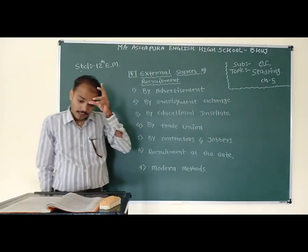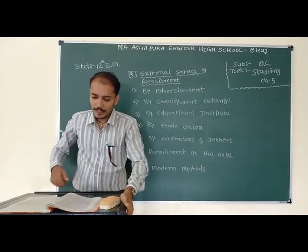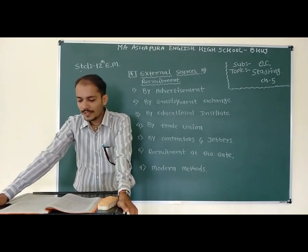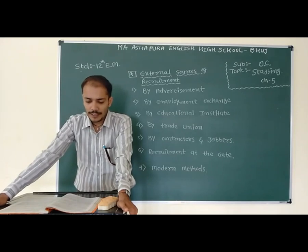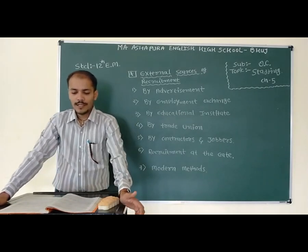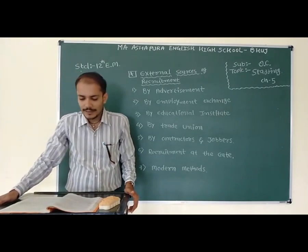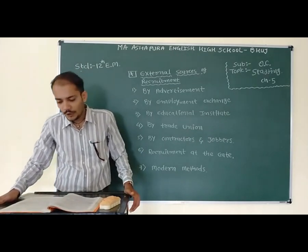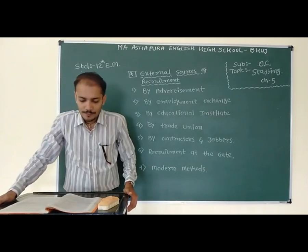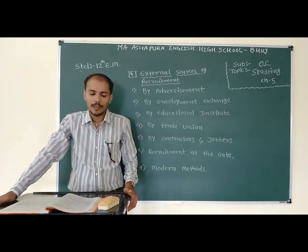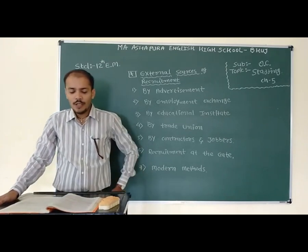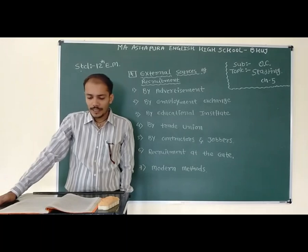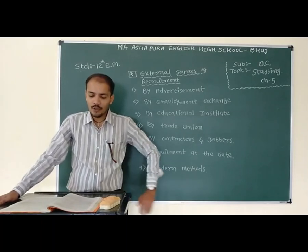Fourth one is trade union. Trade union kya hota hai — trade union makes a list of employees of the organization. Sometimes when there is less work or due to any other reason, workers are retrenched. Kuch reasons ki wajah se workers retrenched ho jaate hain ya nikal jaate hain. Toh unki jagah par jo union hota hai, woh naaye workers ko laata hai. Whenever the need arises due to increased workload, retrenched workers can be recruited with the help of the trade union. This often happens in textile industries, mining industries.